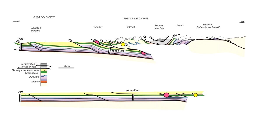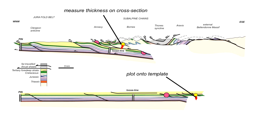Returning to the cross-section, we go to our yellow marker, measure the thickness of the lower Cretaceous, and re-hang it on the template. We then re-hang the rest of the stratigraphy — not only the new Cretaceous thickness but also the underlying Jurassic strata. Notice that the Cretaceous rocks have detached from the underlying Jurassic strata. In the upper cross-section, there is not enough space between the loose line and our yellow marker to accommodate a full stratigraphic thickness. There is only a thin space for the thick Cretaceous rocks, so the Jurassic strata remain beneath the thrust sheet and will be addressed shortly.